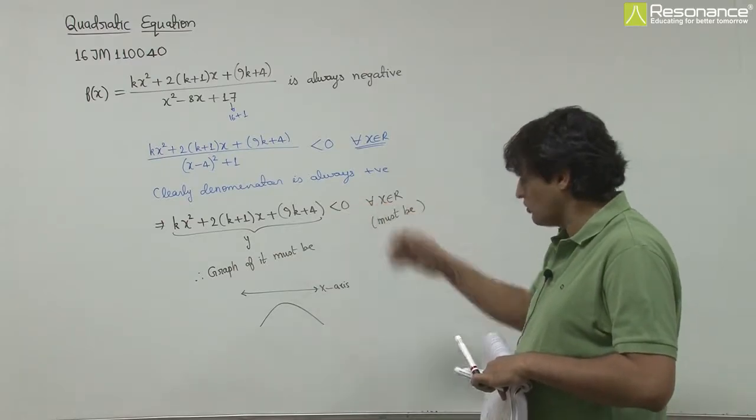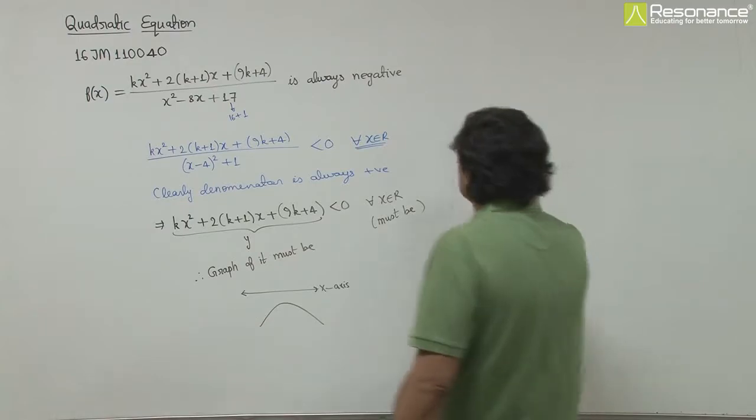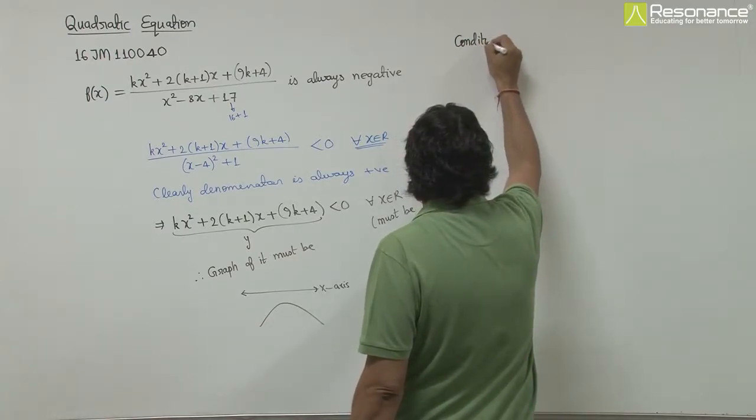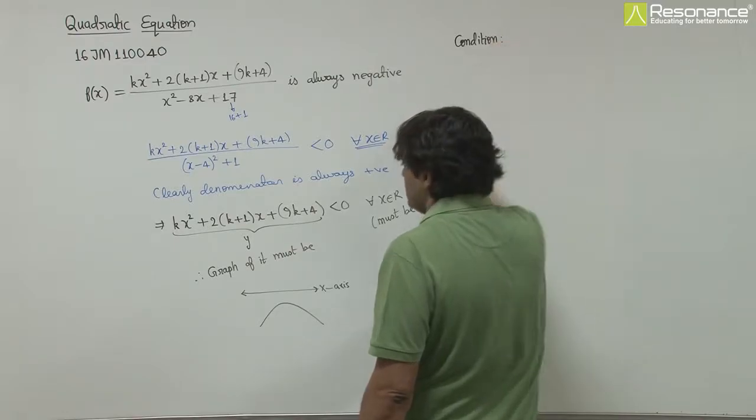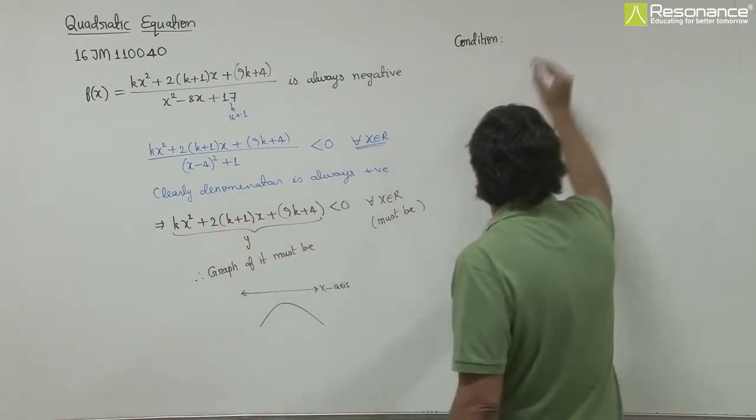This must be negative for all x belongs to R. For such a graph, what is the condition? The coefficient of x² must be less than 0, only then the parabola opens downward.